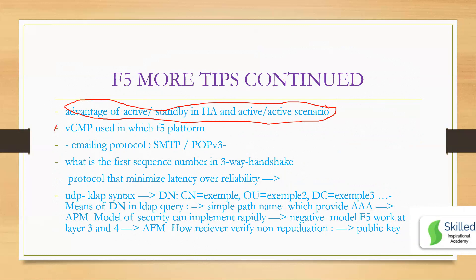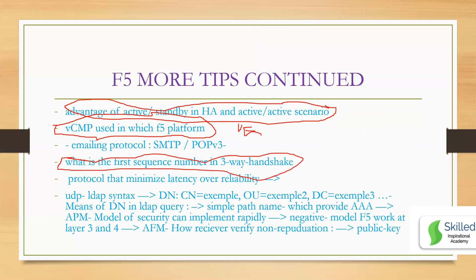F5 also asks about different hardware architectures — whether related to vCMP, virtual edition (VE), or physical platforms. Know the different hardware platforms: physical, virtual, and vCMP. You should also know sequence number concepts in the three-way handshake — they may give you a snippet to identify sequence numbers. Refer to omnisecu.com or basic TCP concept videos. Also know LDAP syntax: what is CN, what is OU, what is DC — know this directory architecture.